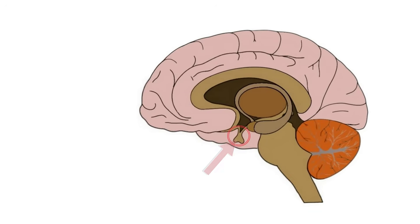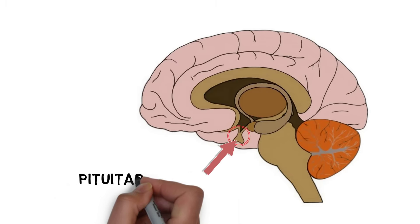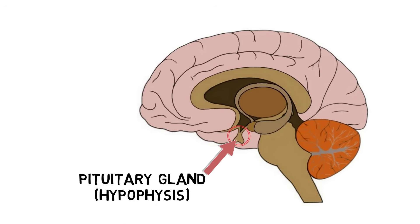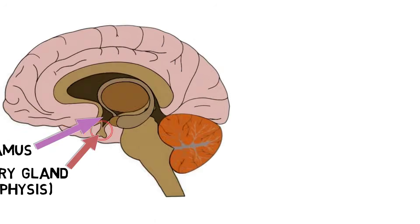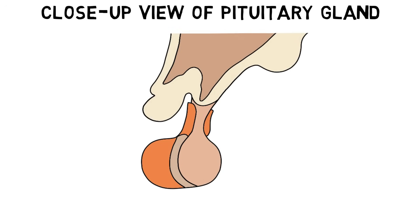The pituitary gland, also known as the hypophysis, is an endocrine gland that's often called the master gland because it not only secretes many important hormones, but also regulates the activity of a multitude of other hormone-secreting glands and target organs throughout the body. The pituitary gland is connected to and situated just below the hypothalamus. The hypothalamus controls hormone release from the pituitary gland. The pituitary gland is divided into anterior and posterior components.